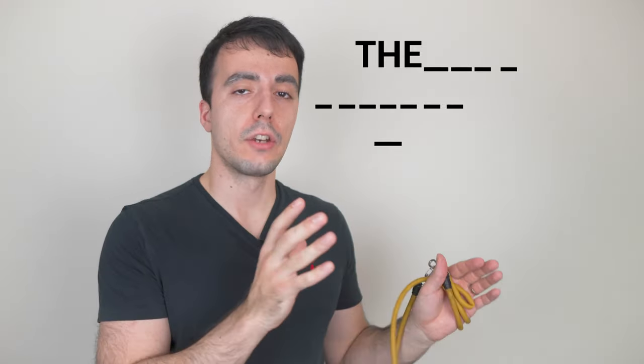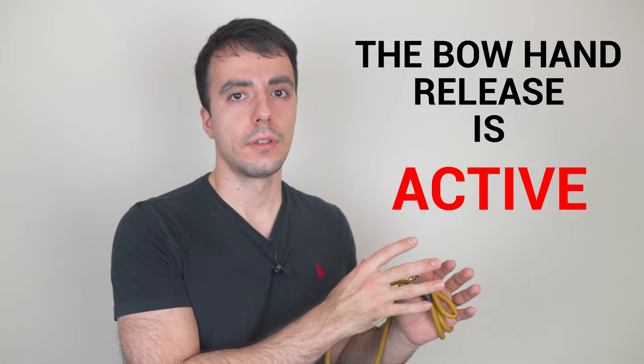So those two drills are really good for practicing how to allow the bow to come out of your hand and not grab the bow. Now let's move on to directing the roll and whether it is active or passive.